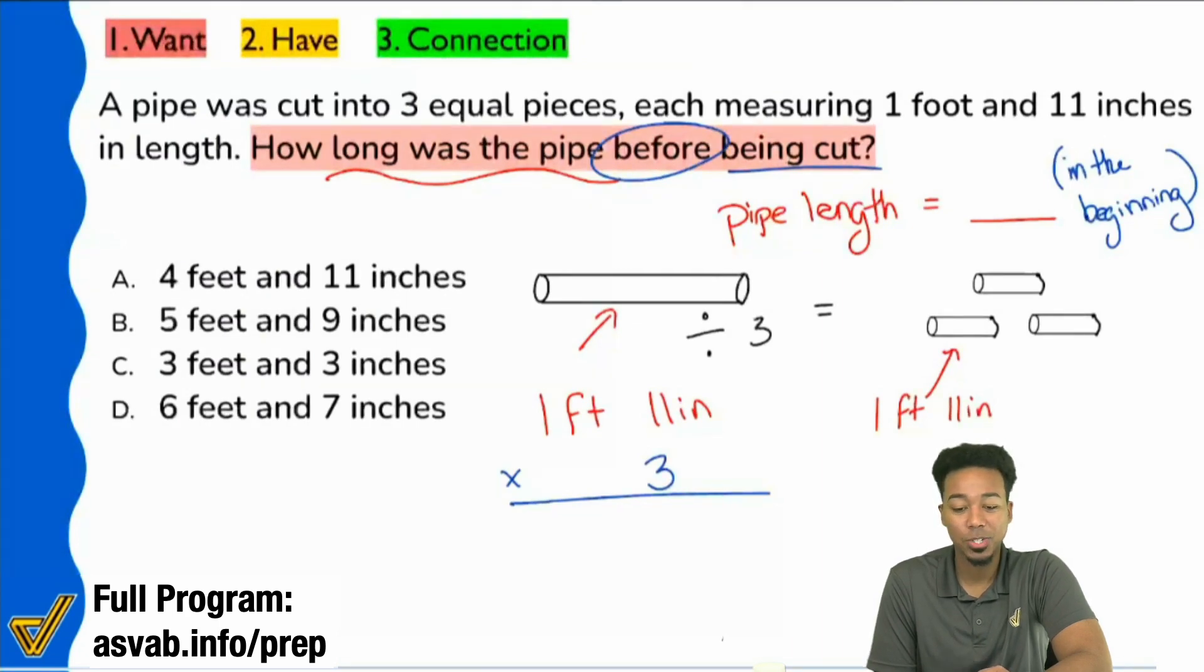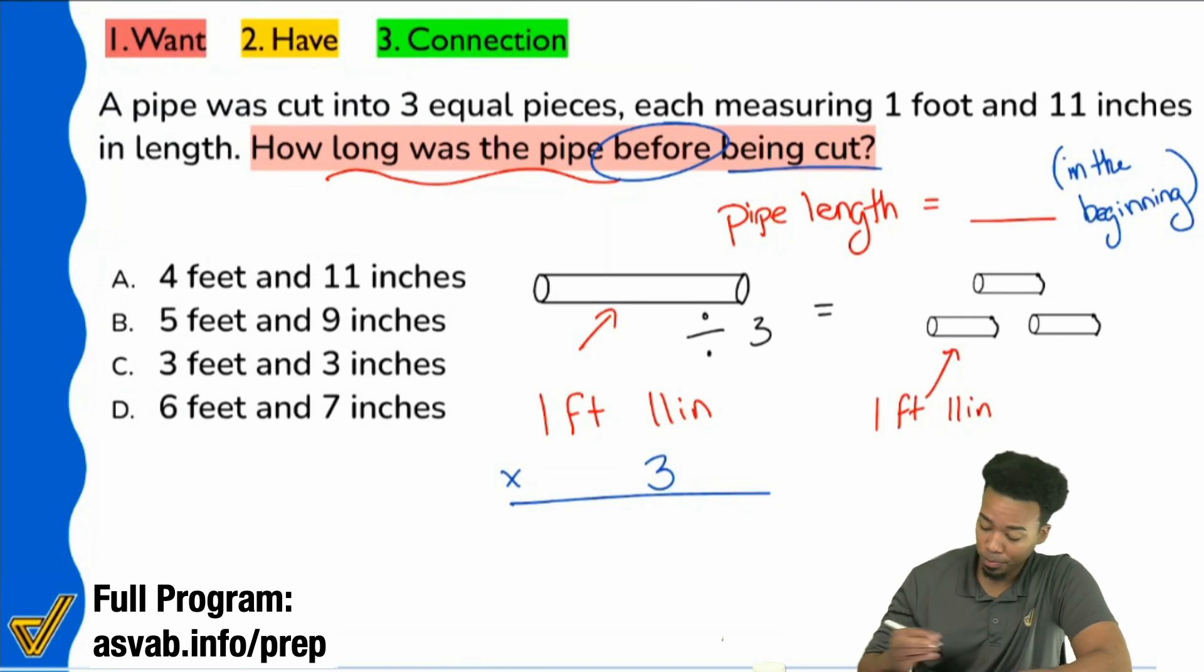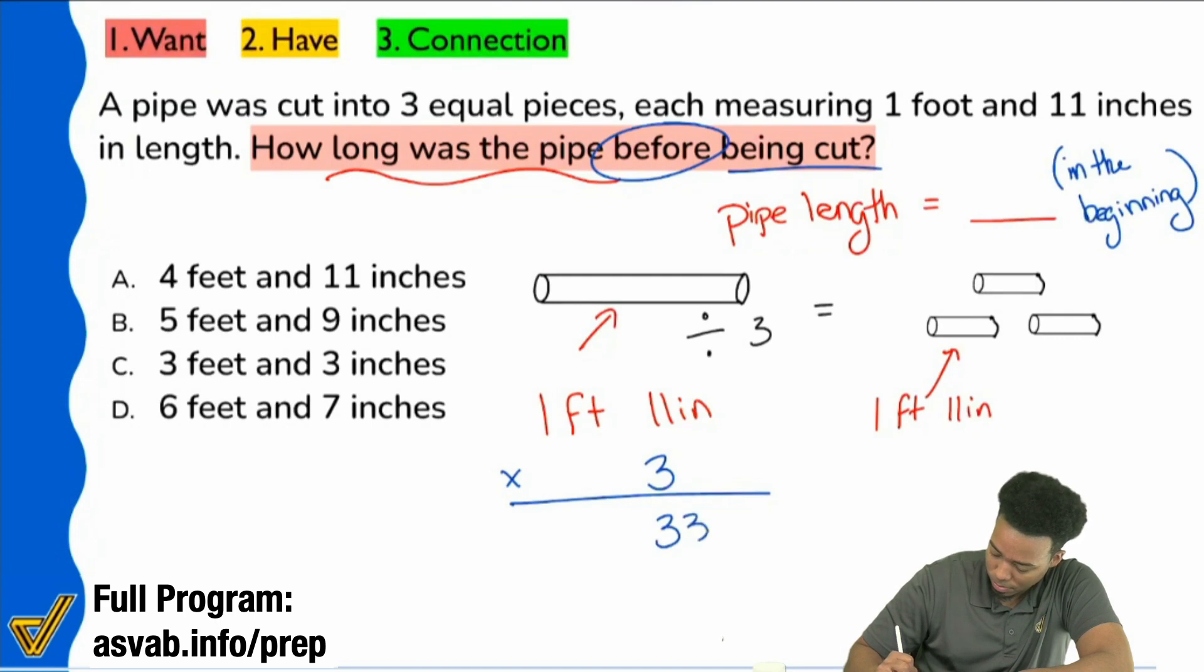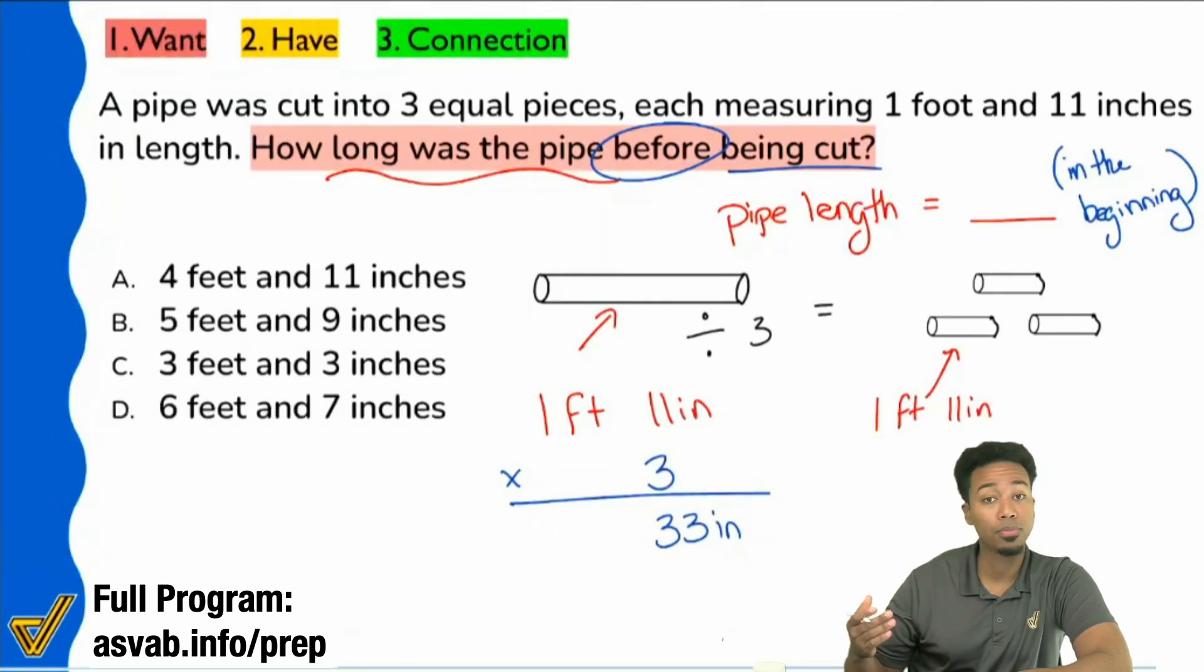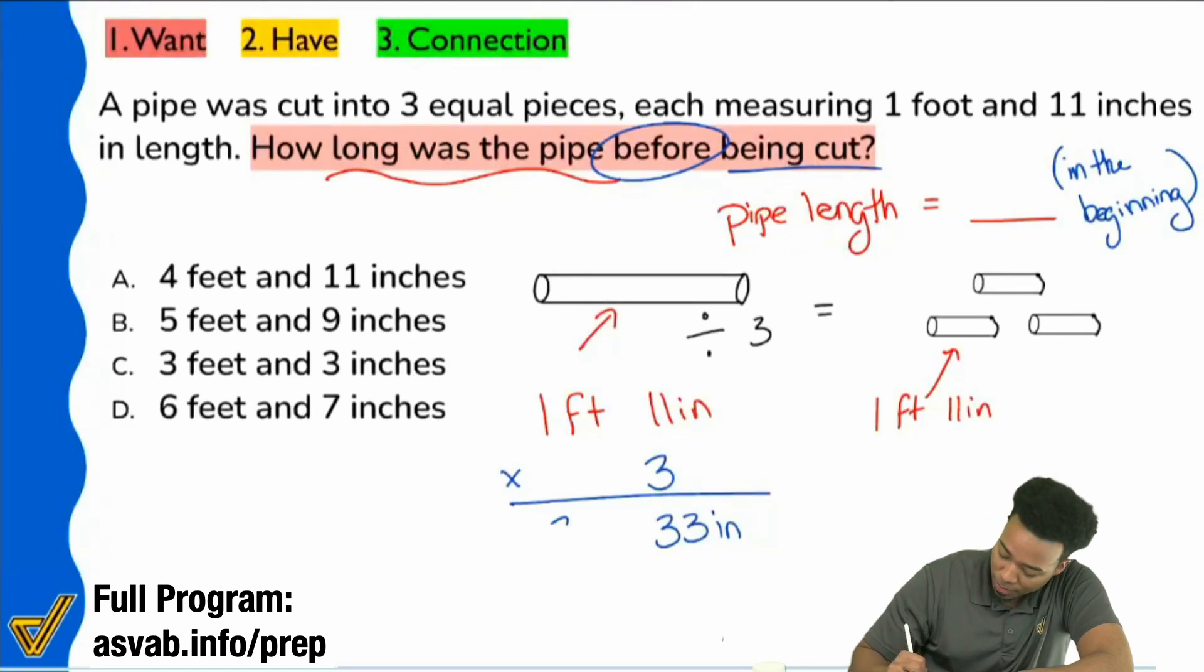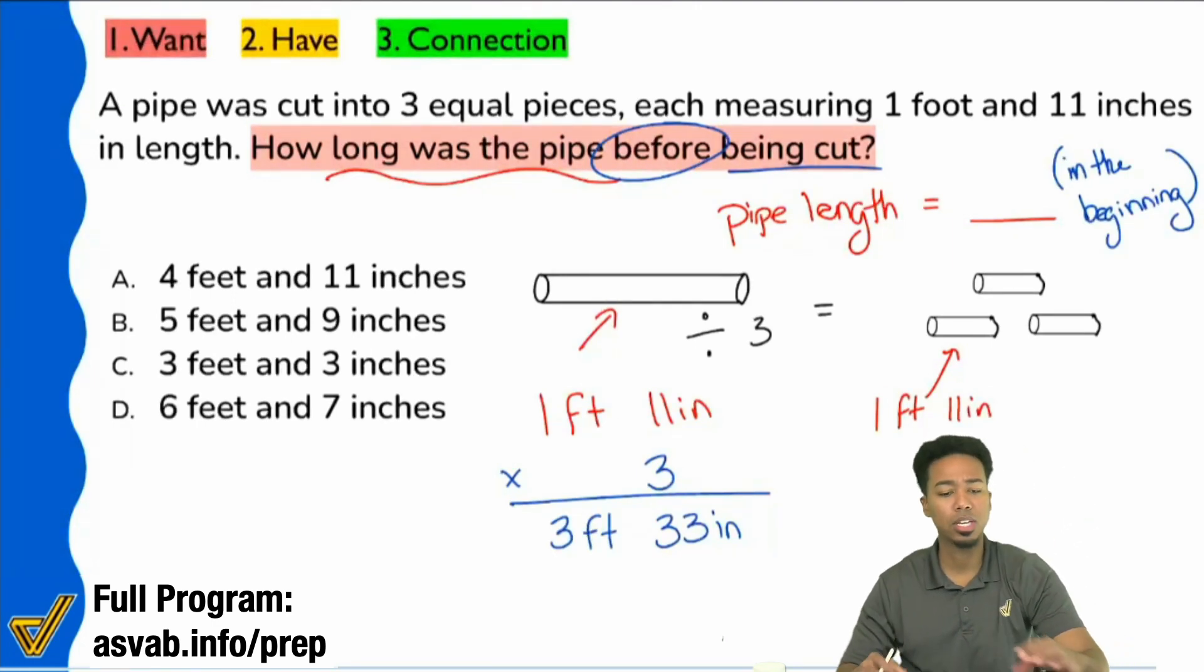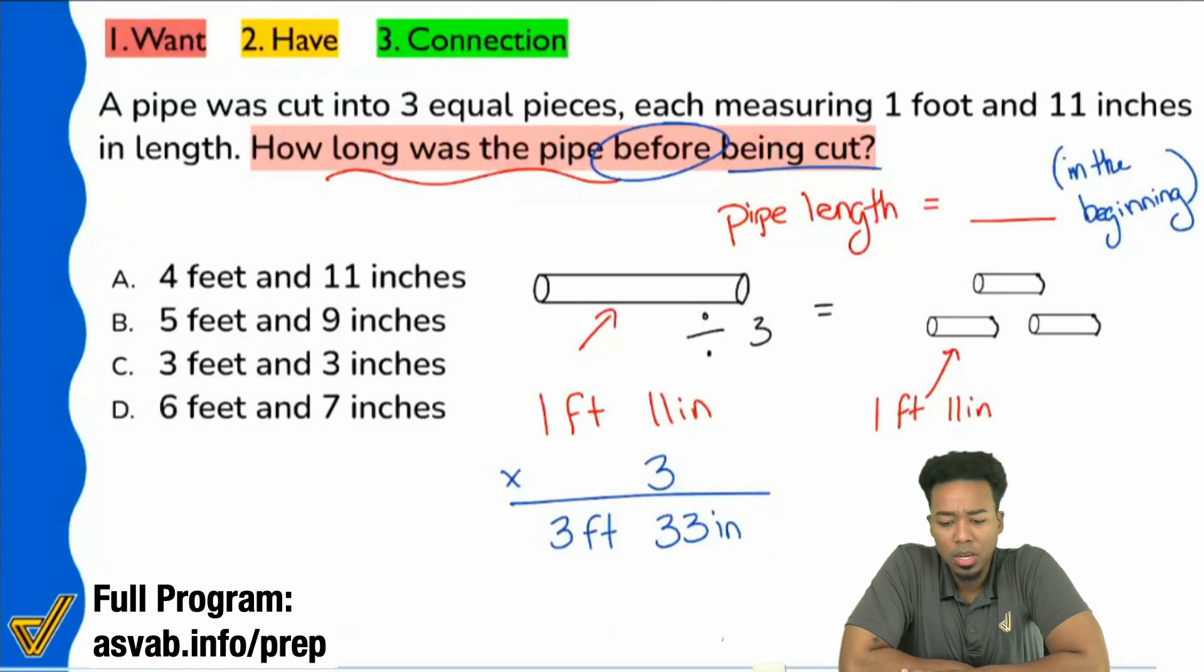Hopefully we painted a good picture for ourselves. Let's go ahead and multiply. You can just multiply each of those numbers by three. So 11 times three - what do we get? 33, but 33 what? That's right, 33 inches. Then if we do one foot multiplied by three, what is that going to be? Three feet. So we have three feet and 33 inches. Is the answer C?